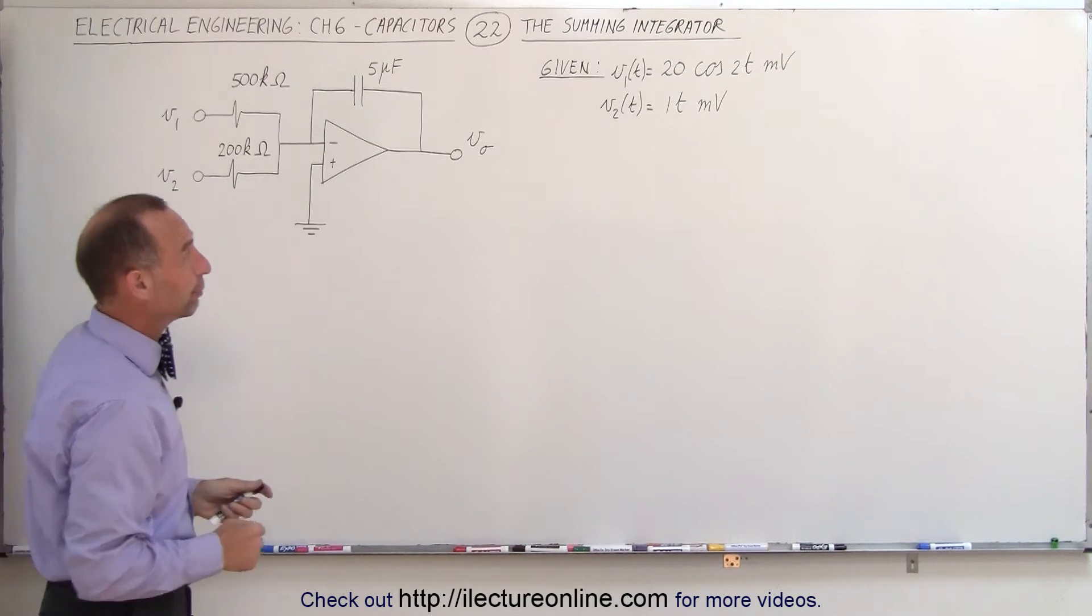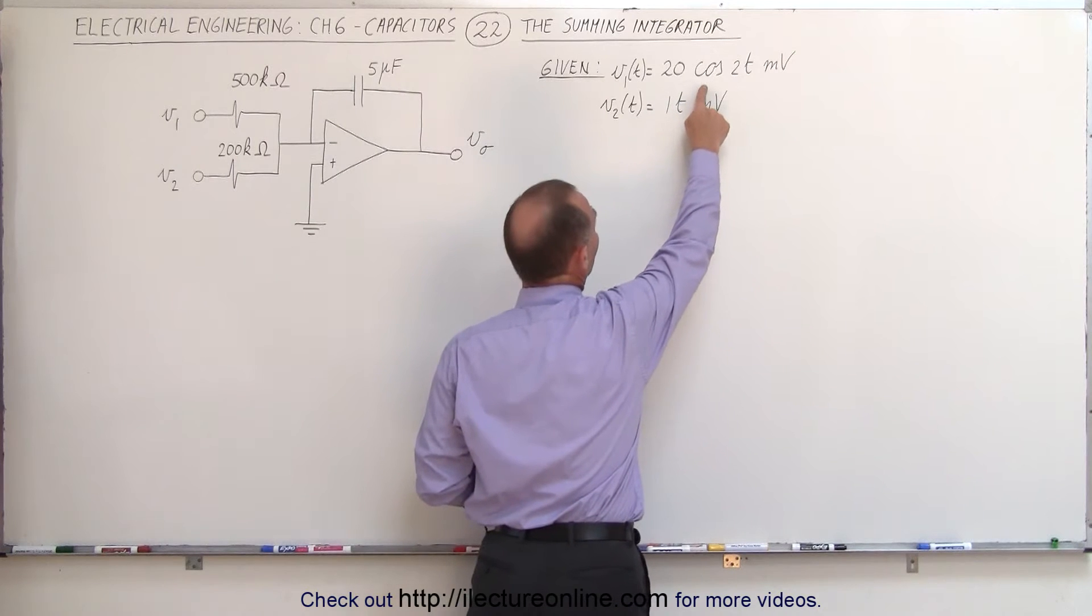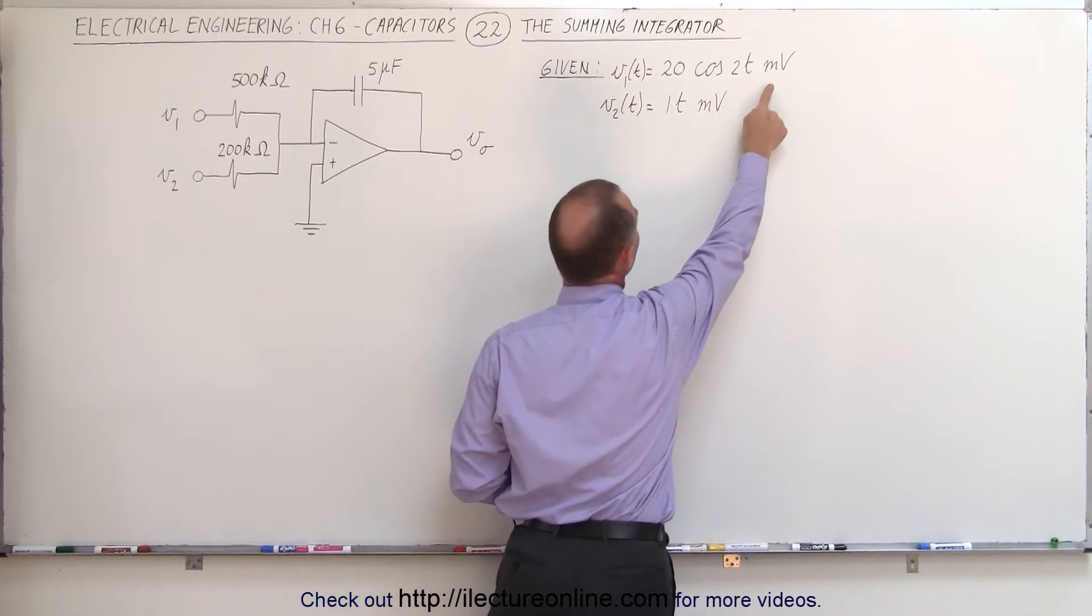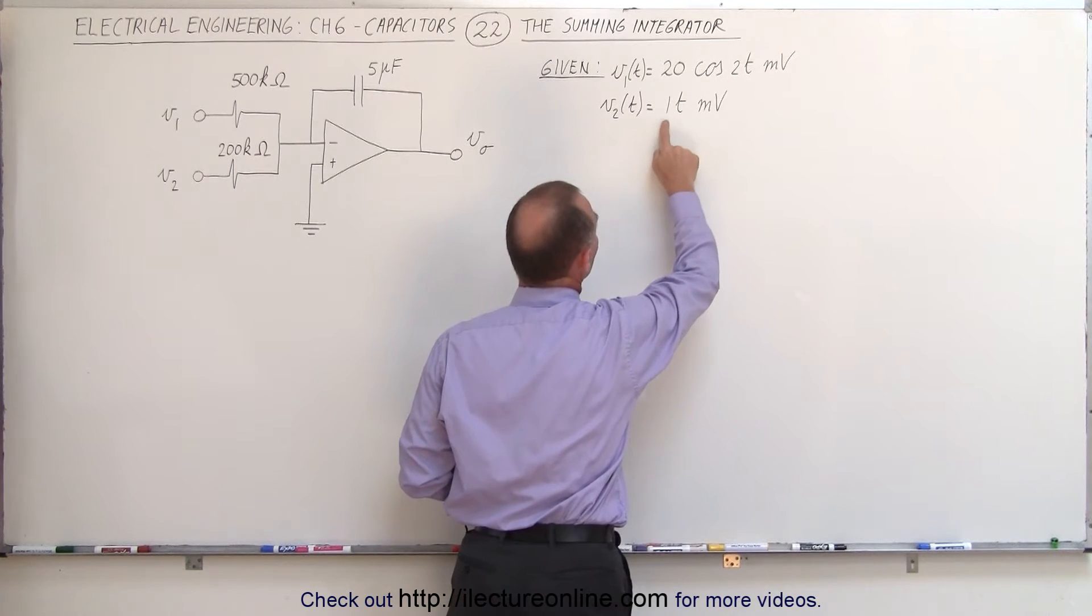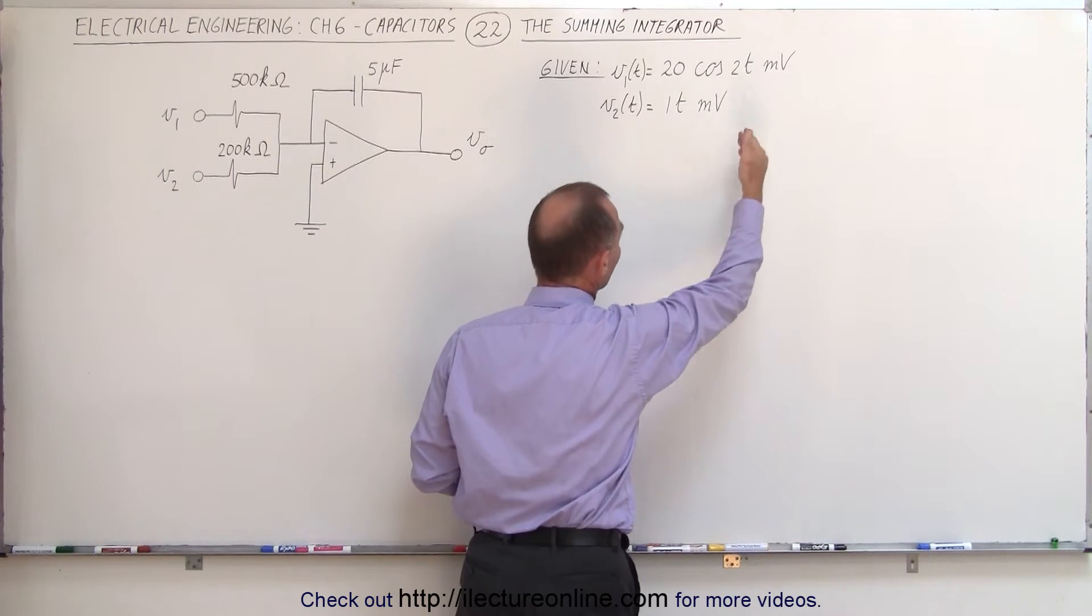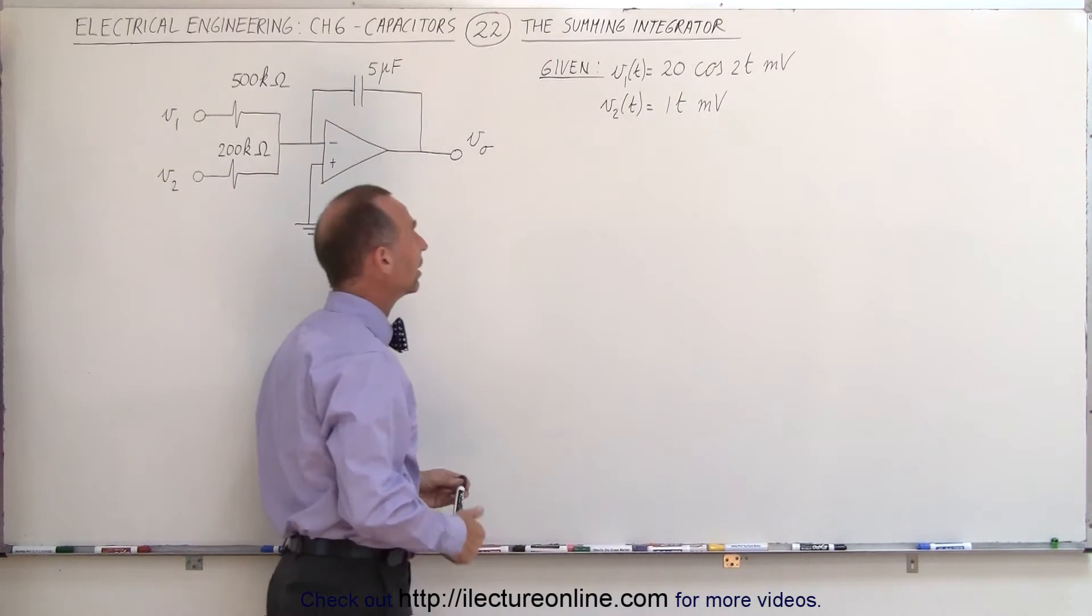So they're the input voltages. The first one is a voltage varying source. We have 20 times a cosine of 2t millivolts, and the second one is not a steady state current, it's an increasing with time kind of voltage, where every second the voltage increases by 1 millivolt.